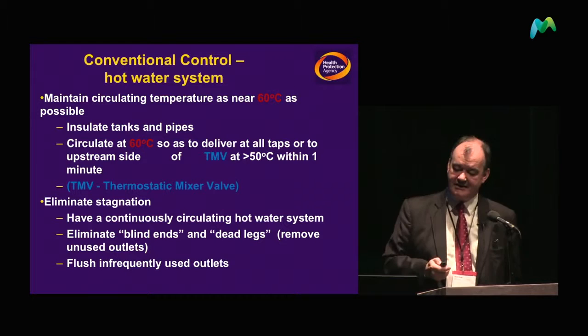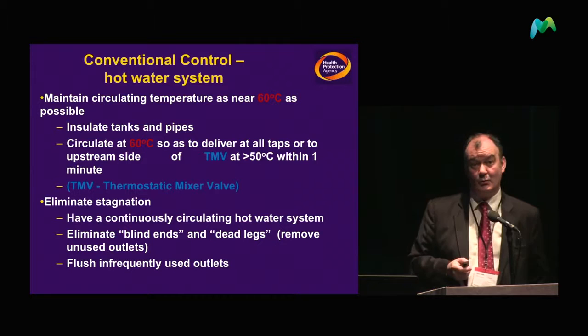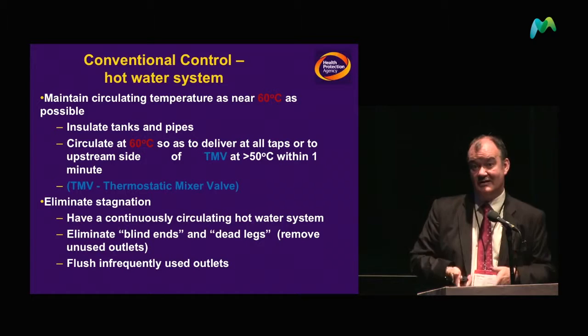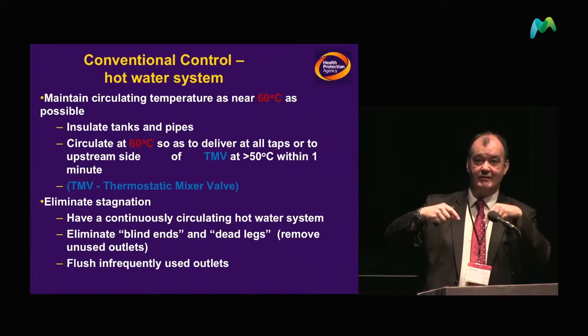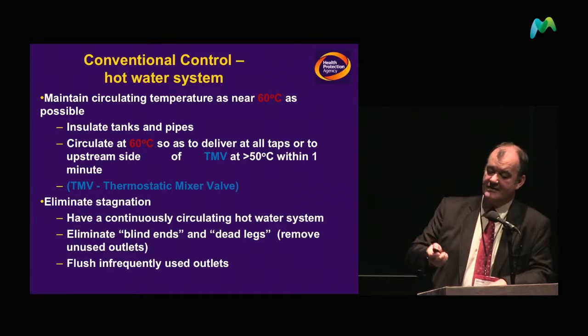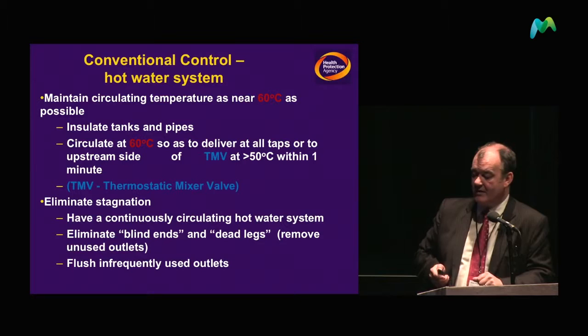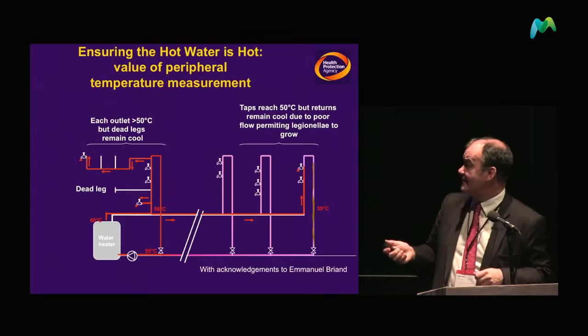The final point in terms of conventional control is about eliminating stagnation. A blind end is something where there is nothing beyond it; a dead leg is a redundant piece of piping still connected, in which you can get material flowing in or out with a drop in pressure. These are the real problem when looking at how to address potential issues in an institution.